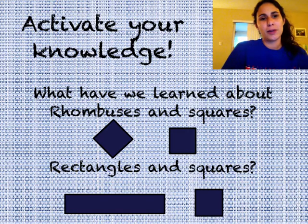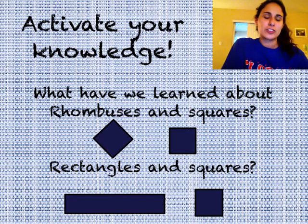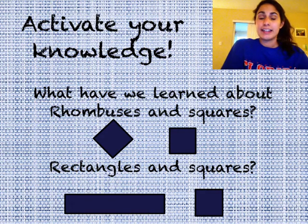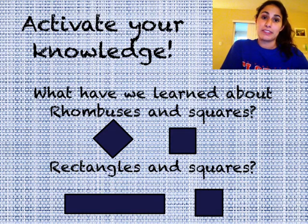Think about what we have learned about rhombuses and squares so far. There's a rhombus and there's a square there. Remember how we talked about similarities between a rhombus and a square, and we talked about differences between a rhombus and a square.